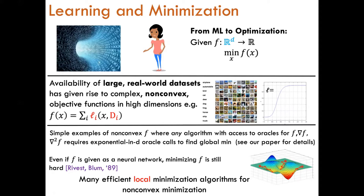Even in applications where the objective function is given as a neural network, the problem of finding the global minimum of such a function is known to be hard. For this reason, we cannot always find the global minimum of a non-convex function f, and instead we can do the next best thing, which is to find a local minimum of f. In the figure, you can see that the function has different local minima, and there are many algorithms which have been shown to efficiently find such local minima.